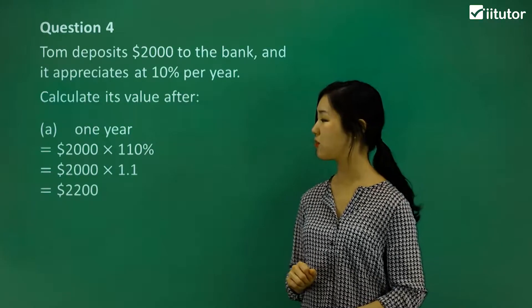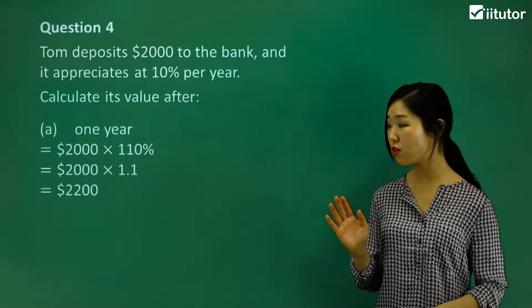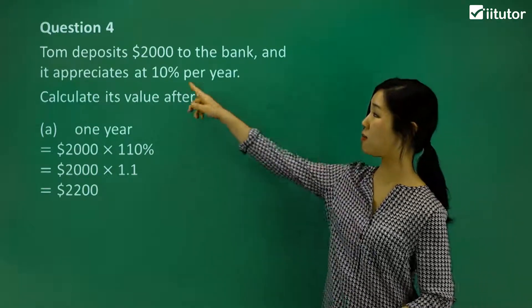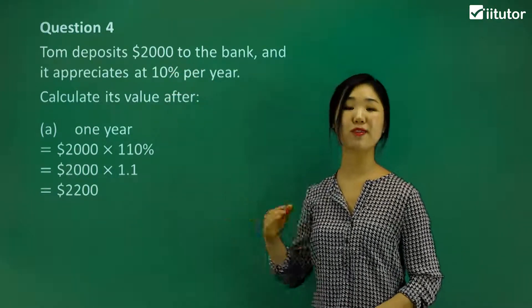So basically you're multiplying by 1.1 of the initial value. And just calculate it. It should be 2200. That will be the value after one year. And see how it's bigger than the initial value? That's because it's appreciated.